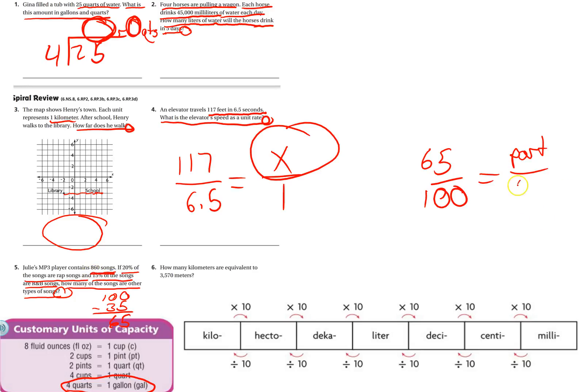Okay, so now you can solve for the part, find the part. A few different ways you can do this. My favorite is to change this to a decimal, so it'd be point 65, and then I would multiply that times the whole. That's my favorite way of doing it, but again, a lot of different ways to solve.